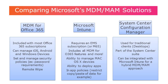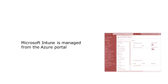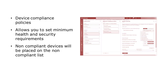Now that we have done an overview of all of the options, let's focus a bit on Microsoft Intune and see what features it offers. Intune is a service that can be managed directly from the Azure portal, and it doesn't have its own admin center. Device Compliance Policies allow you to set minimum health and security requirements. You can set things such as updates, encryption, password types, even blocking USB debugging on devices, making sure that the devices themselves are secure and up to standard. Non-compliant devices will be placed on the non-compliant list where you can take additional actions.